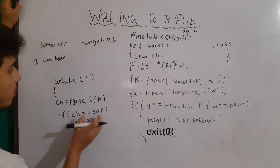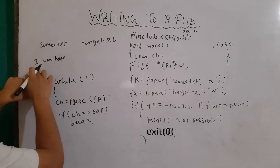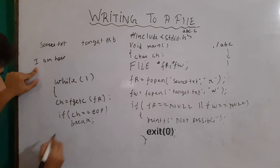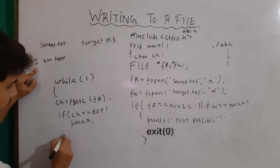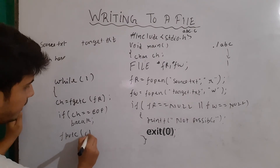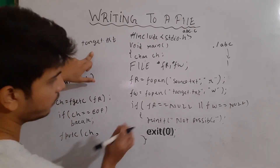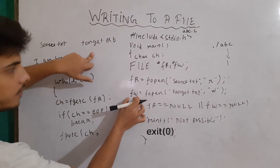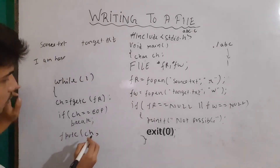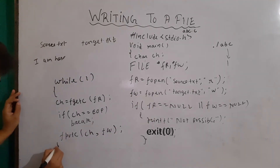But if this condition is false, we have to write the character to the target file. So I write fputc(ch, fw) — writing the character ch to the file pointer fw. Then I close it, and that will be all.